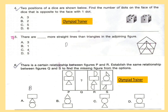Question 4: Two positions of a dice are shown below. Find the number of dots on the face of the dice that is opposite to the face with one dot. Question 5: There are dash more straight lines than triangles in the adjoining figure. Question 6: There is a certain relationship between figures P and R. Establish the same relationship between figures Q and S to find the missing figure from the options.